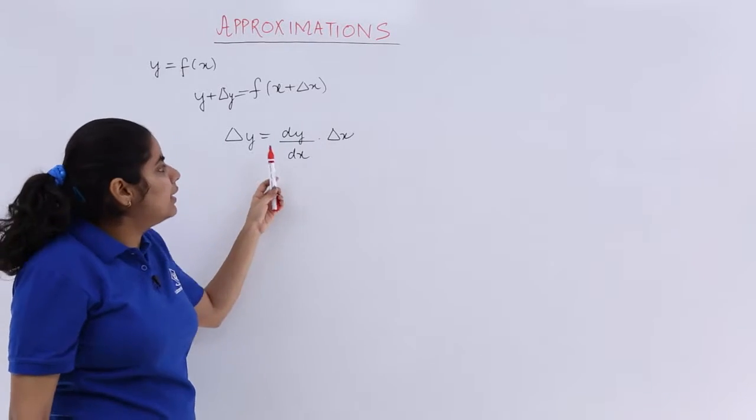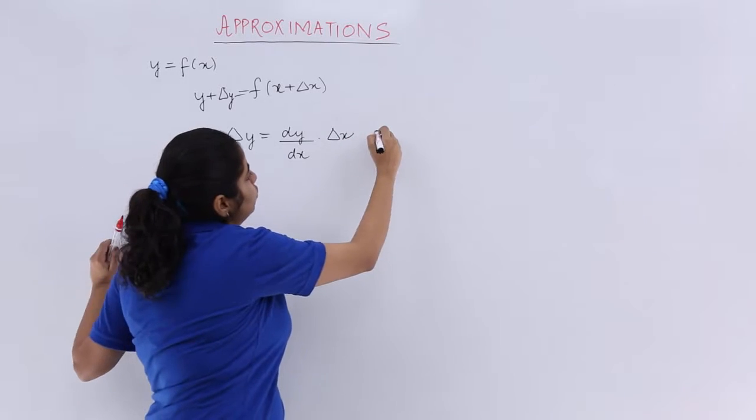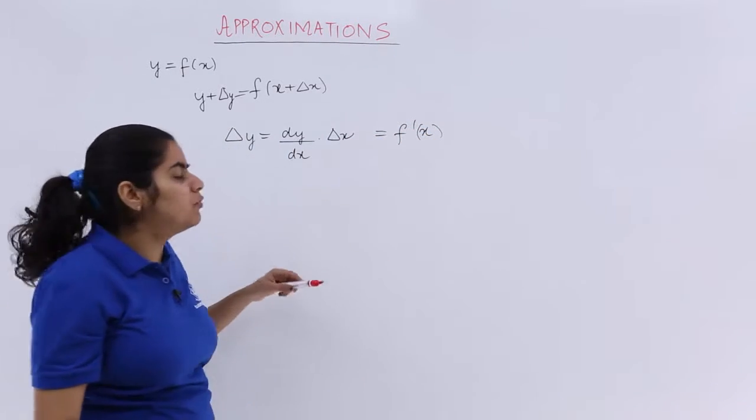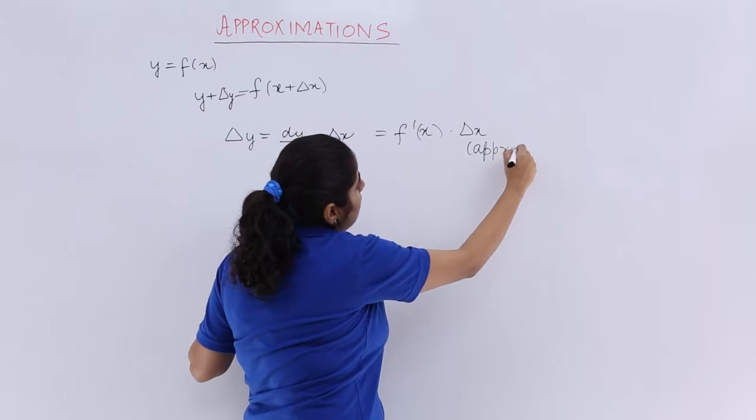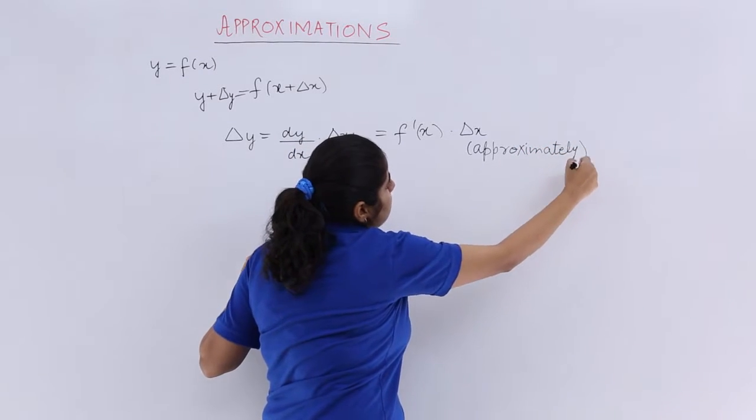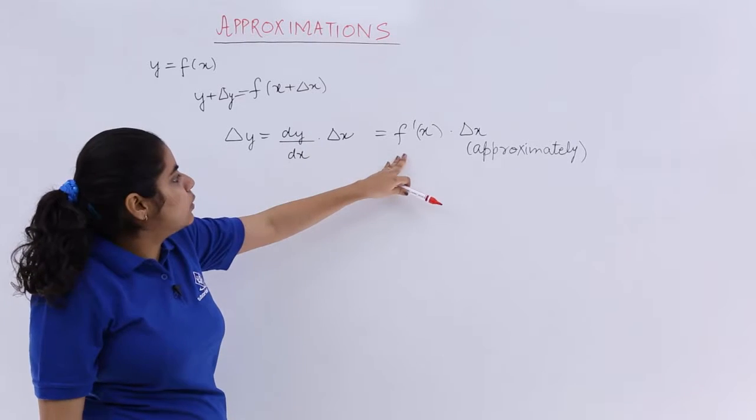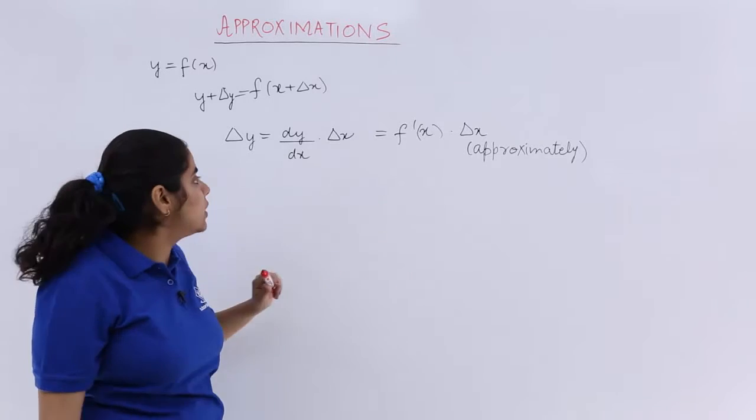Now dy upon dx can be written approximately equal to f dash x because it is nothing but the differentiation only multiplied by dx. That is written very much approximately and we can easily write it approximately because we are studying approximations only. That means del y is equal to f dash x del x.